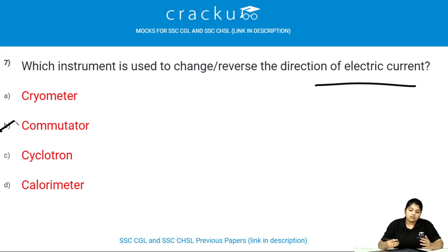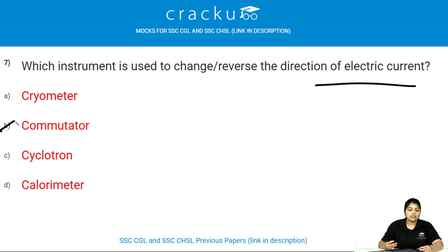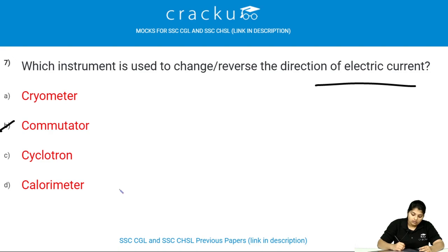A commutator is used to change or reverse the direction of electric current. It reverses the direction of current in the coil of a motor.